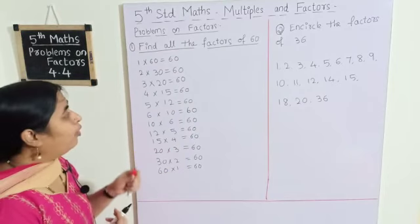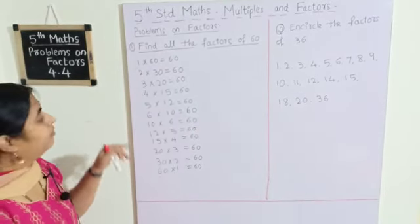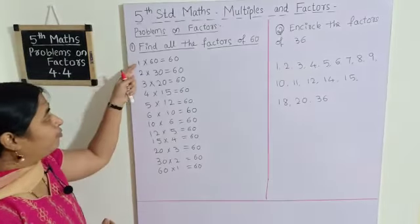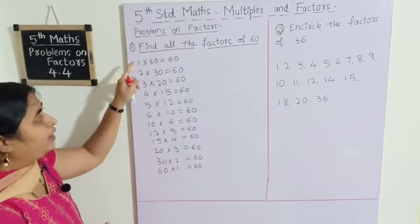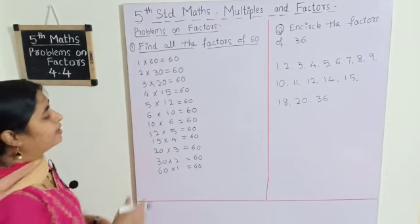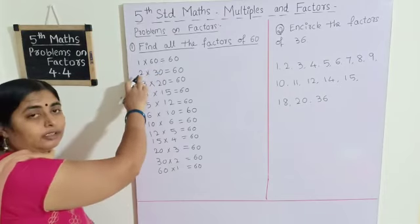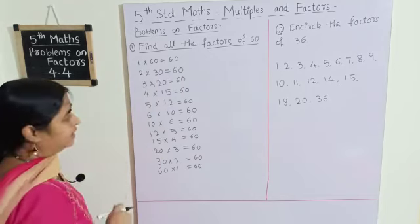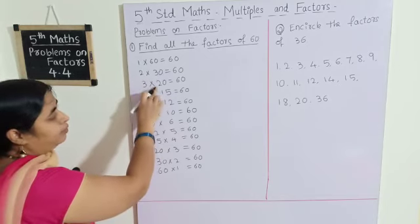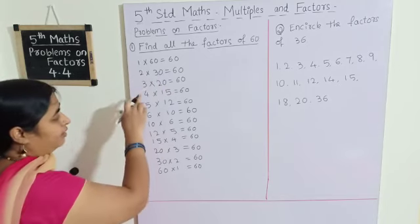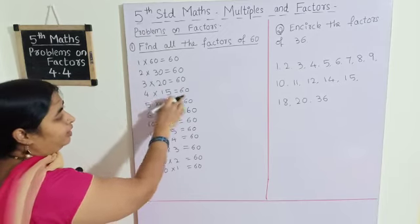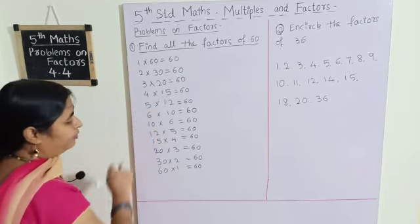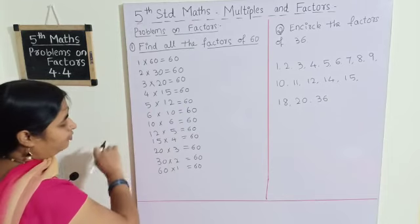For our easiness, we will go from the table of 1. So 1 into 60 equals 60. Next, in the table of 2, 2 into 30 equals 60. In the table of 3, 3 into 20 equals 60. In the table of 4, 4 into 15 equals 60. In the table of 5, 5 into 12 equals 60. In the table of 6, 6 into 10 equals 60.